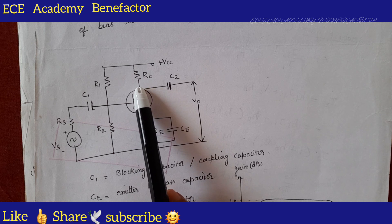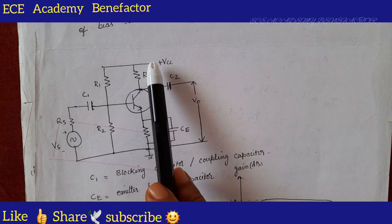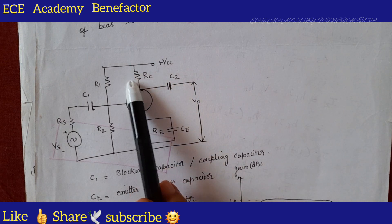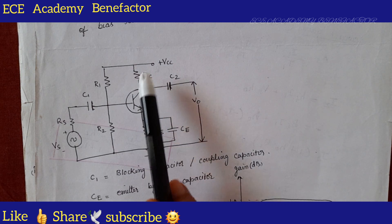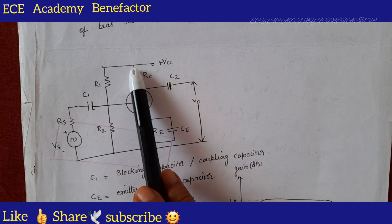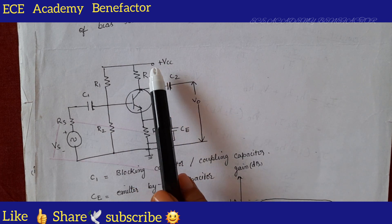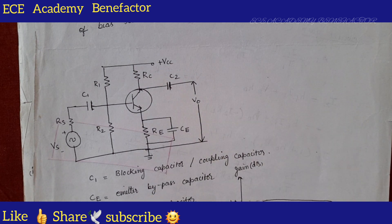The output voltage here is VCE. How much is VCE? VCC minus whatever drop has occurred here. The output voltage VCE equals VCC minus ICRC. This is the output voltage equation of the CE amplifier.